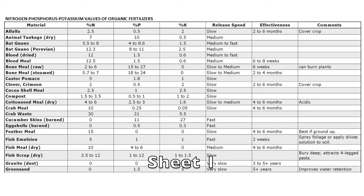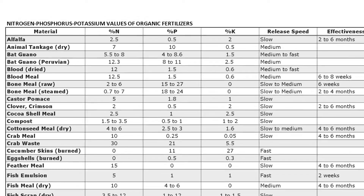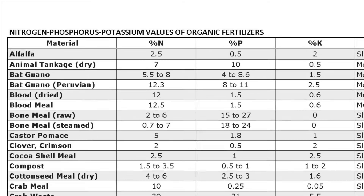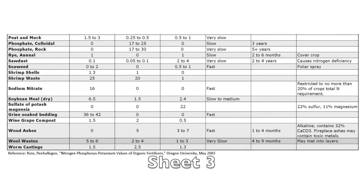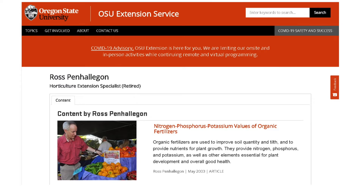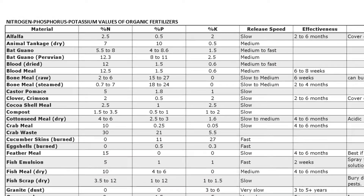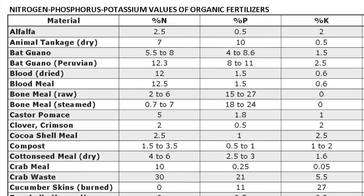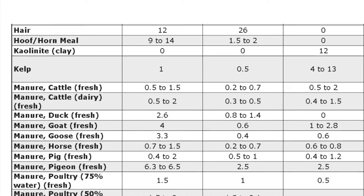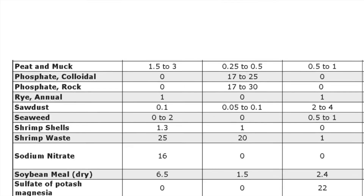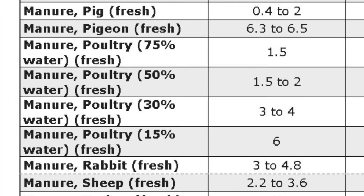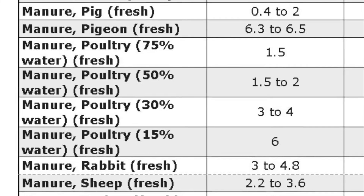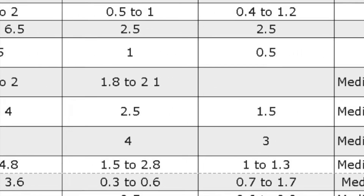Now, let's take a look at this table. This table provides percentages of nitrogen, phosphorus, and potassium present in organic fertilizers, from a report authored by Ross Penhillagon, a horticulture extension specialist from Oregon State University. One thing you'll notice is that there is a great variation in nutrient values among organic fertilizers. Even fertilizers with the same organic materials could vary greatly in nutrient contents. For example, the nitrogen content of chicken manure could vary from 1.5 percent to 6 percent, phosphorus from 1 to 4, and potassium from 0 to 3.